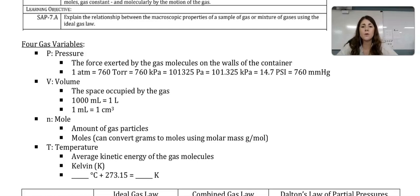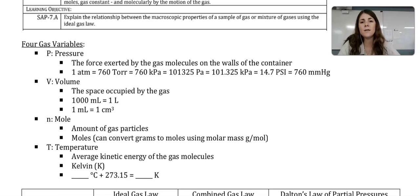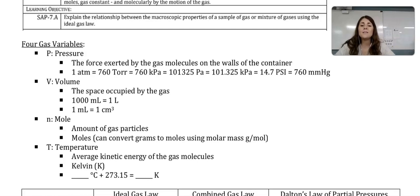Volume is the space occupied by the gas. Remember that 1,000 milliliters equals one liter, and one milliliter equals one centimeter cubed — this is very important. Moles is the amount of gas particles. We learned about moles in Objective 1.1, so there might be some problems where you're given grams and need to convert grams to moles using the molar mass.